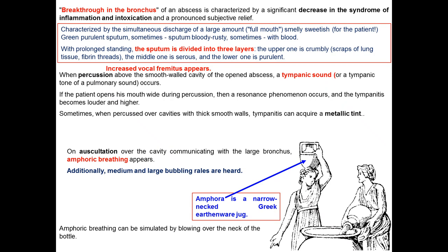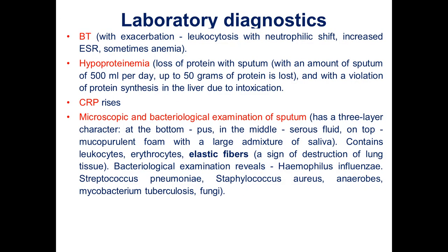In addition to amphoric breathing, medium and large bubbling rales may be heard. Amphoric breathing can be simulated by blowing over the neck of a bottle. Laboratory diagnosis shows changes in blood tests: with exacerbation, leukocytosis with neutrophilic shift, increasing ESR, and sometimes anemia. Hypoproteinemia may be found, connected with the loss of proteins through sputum.